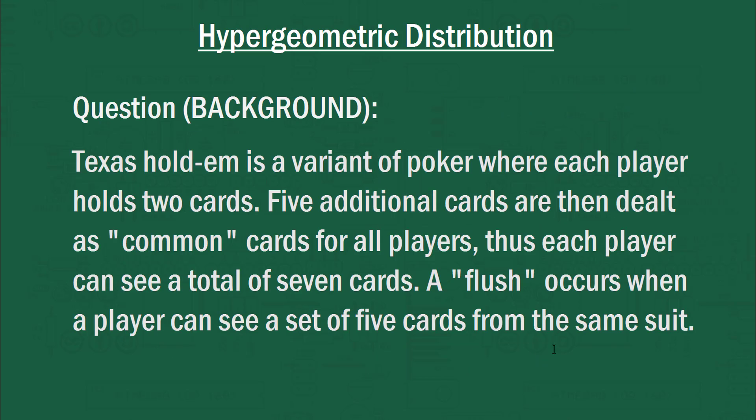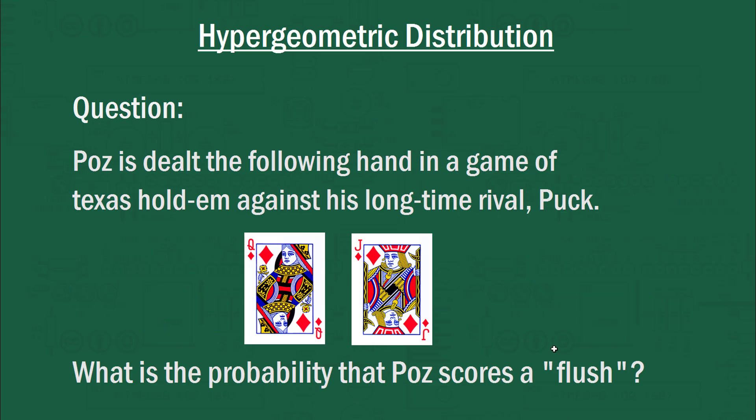Here's a question involving a game of Texas Hold'em. It's a variant of poker where each player holds two cards in their hand, and five additional cards are dealt as common cards on the table for all players. Each player can see a total of seven cards — two in their hand and five on the table. A flush occurs when a player can see a set of five cards from the same suit. So Poz is dealt a queen and a jack of diamonds against his rival Puck — what's the probability that Poz scores a flush after the five cards are dealt on the table?